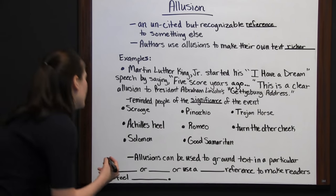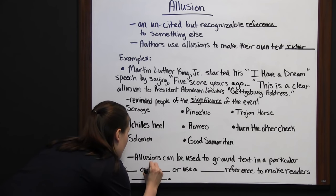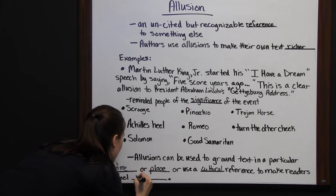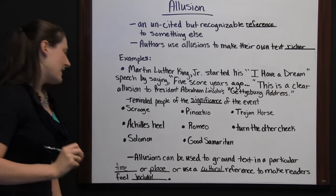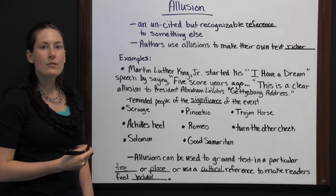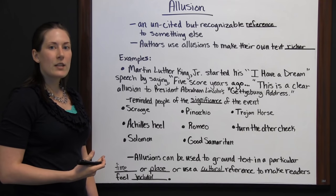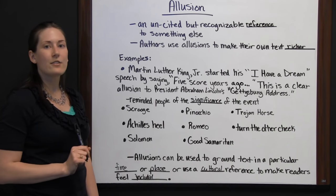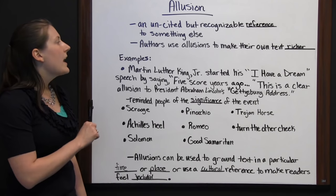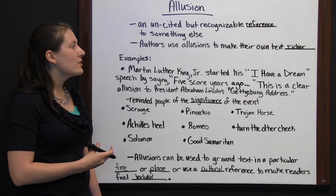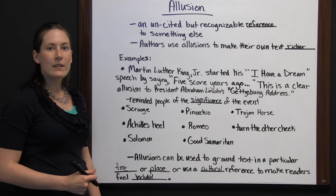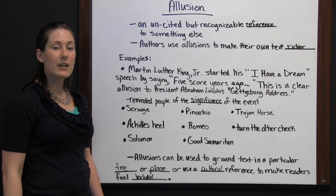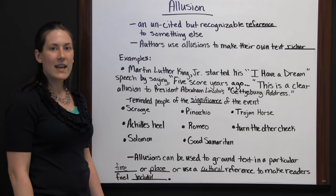Allusions can be used to ground text in a particular time or place, or they can use a cultural reference to make readers feel included. There are lots of reasons a writer would use allusions, but every time you use one, it's meant to make your text richer and give your text more than it had before. When you're reading, watch for allusions. If you see one, think about what connotations you get and how that reference changes your interpretation of the text — that's what allusion is there for.